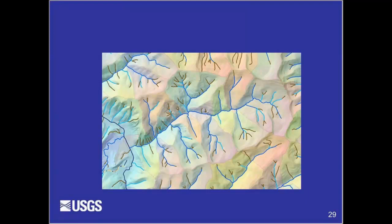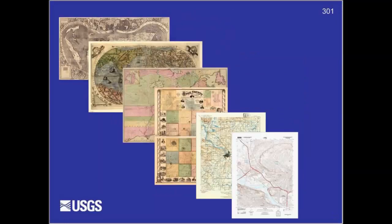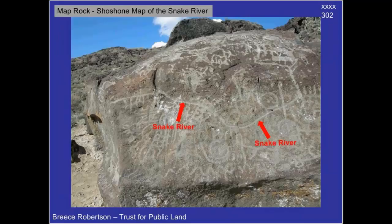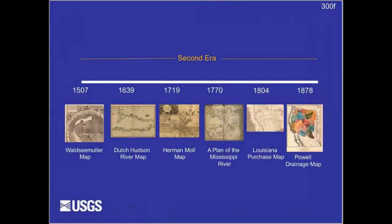Next, we'll look at a brief history of hydrography data that has given rise to the NHD of today. The mapping of water in the United States has a rich history that could be said to begin before the new world was discovered by Europeans. A petroglyph found in lands once occupied by the Shoshone people in Idaho, known as Map Rock, is believed to map the Snake River. These pre-European maps make up the first era of mapping water on the continent. The second era started in 1507 with European exploration, lasting through 1878, during which rivers were the most prominent feature found on maps.